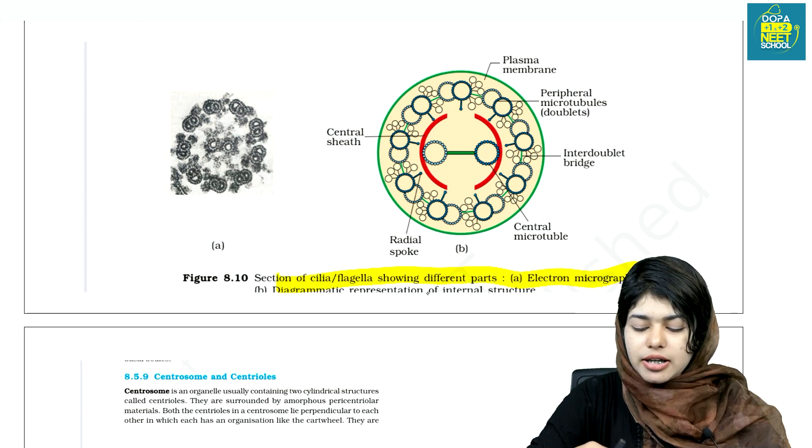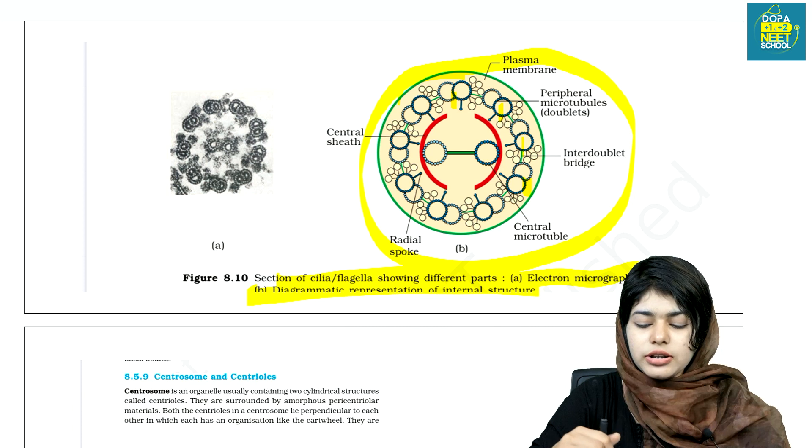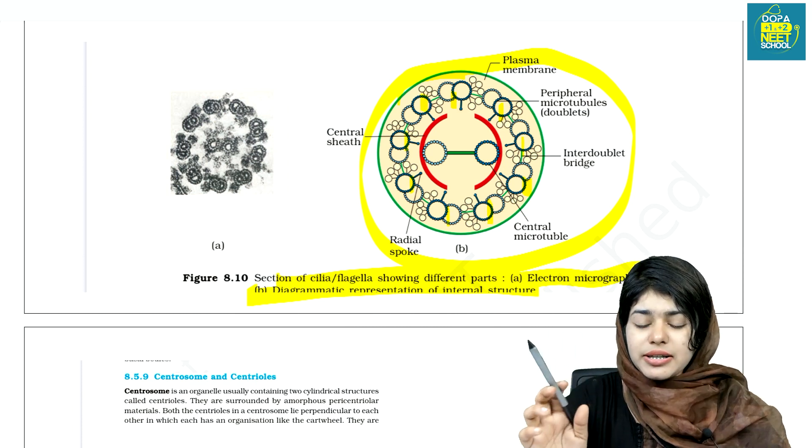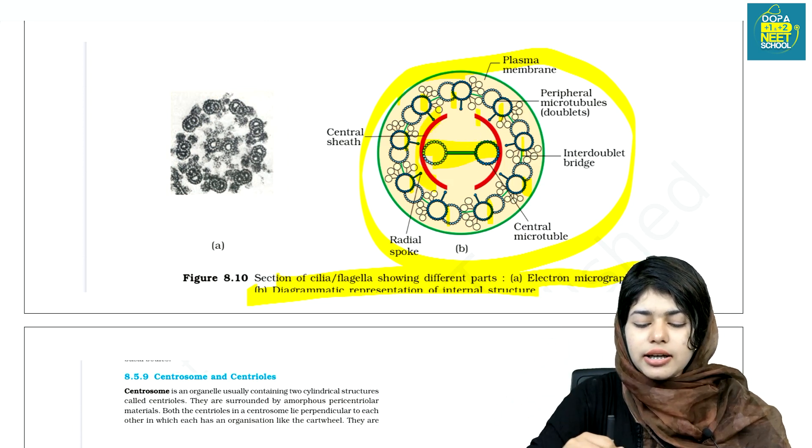Next is cilia. Cilia has 9 plus 2 arrangement: 9 doublet microtubules at periphery and 2 central microtubules.